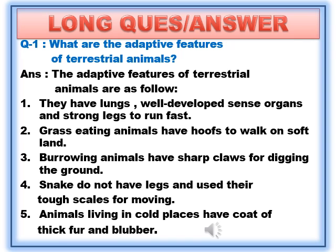Question number 1: What are the adaptive features of terrestrial animals? Answer: The adaptive features of terrestrial animals are as follows. Number 1: They have lungs, well-developed sense organs, and strong legs to run fast.